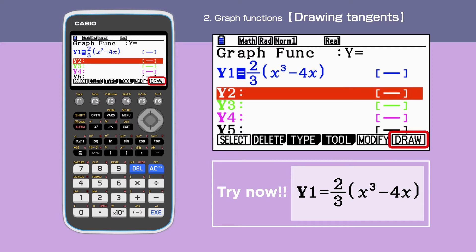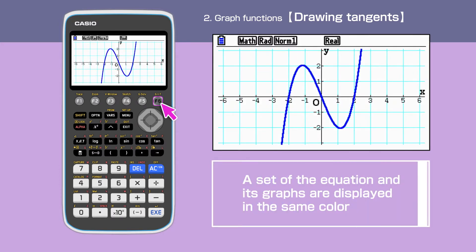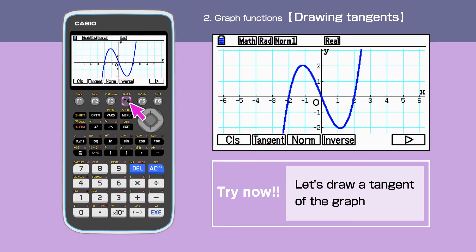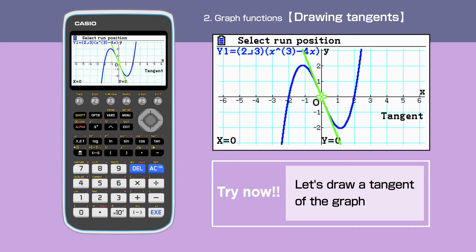To draw this graph, press F6. We have drawn a cubic graph and now we will draw a tangent. Press Shift, then F4, sketch, followed by F2 to select tangent. The tangent is drawn.